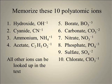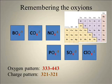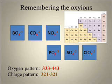It's necessary for you to memorize these ten polyatomic ions. The first four almost make sense, but numbers five through ten all end in '-ate' and get a little tricky. On the periodic table, boron, carbon, and nitrogen are on the top row, and below them are phosphorus, sulfur, and chlorine. The six ions to memorize are borate, carbonate, nitrate, phosphate, sulfate, and chlorate. Remember the oxygen pattern from boron down to chlorine: 3-3-3-4-4-3. And the charge pattern from boron down to chlorine: 3-2-1-3-2-1.